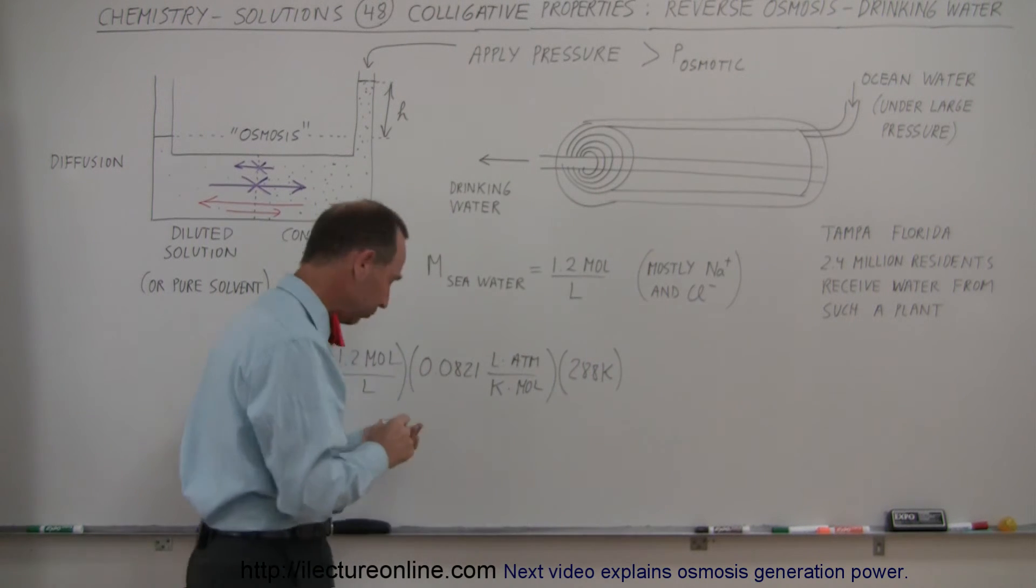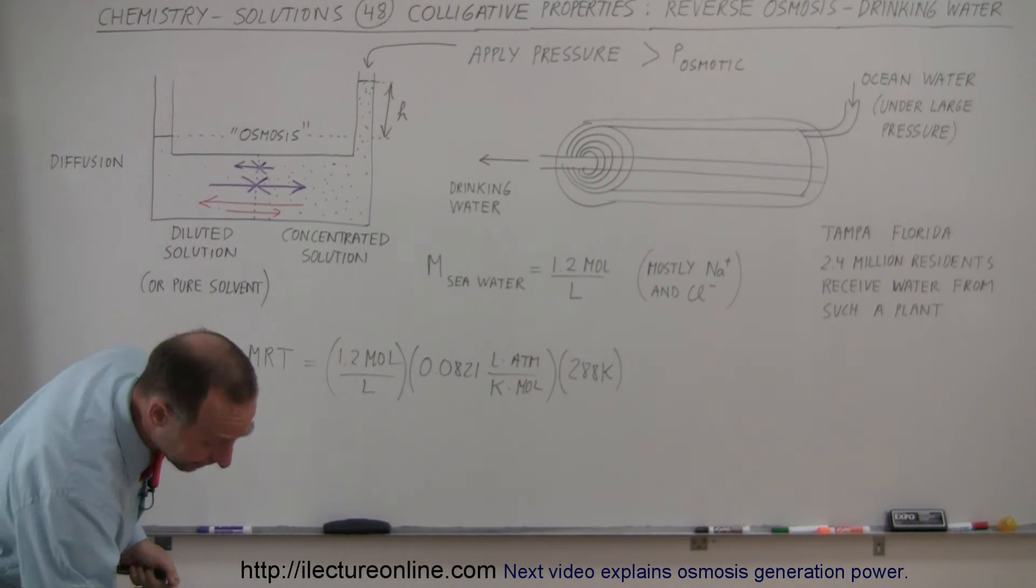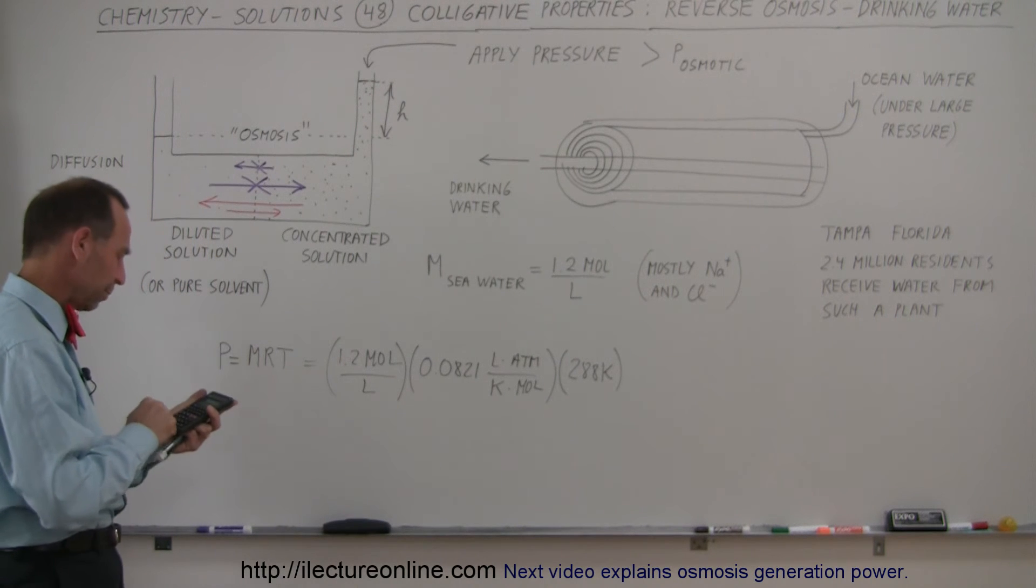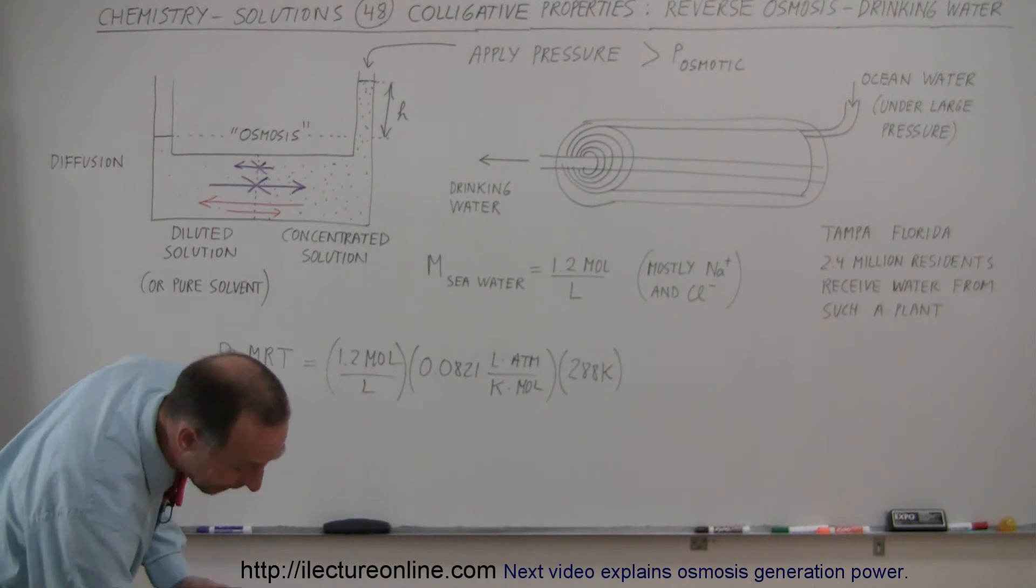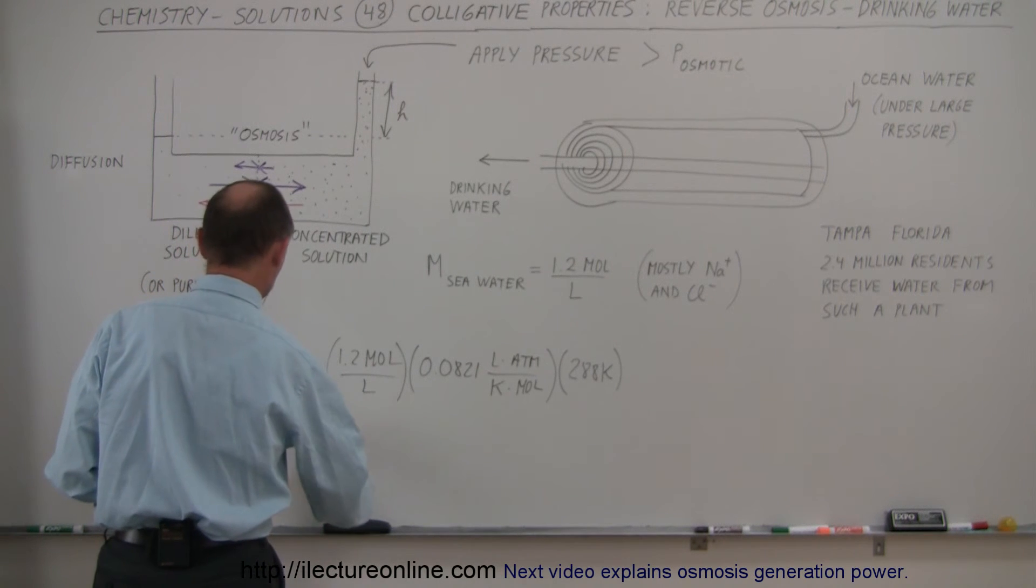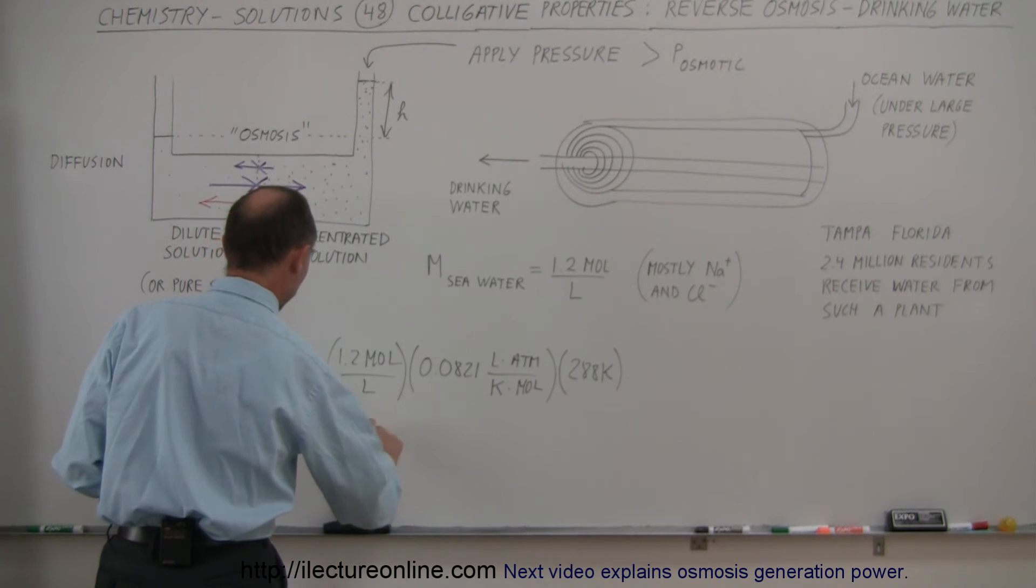So how much pressure is required? You'll be surprised. It's quite a bit. So we have 1.2 times 0.0821 times 288 equals 28.4 atmospheres of pressure. So that would be 28.4 atmospheres. That's a lot of pressure.